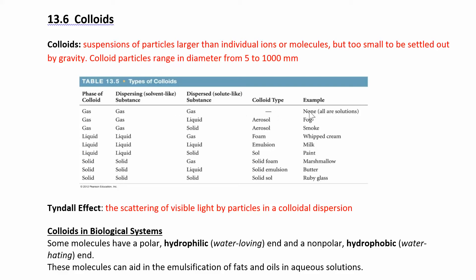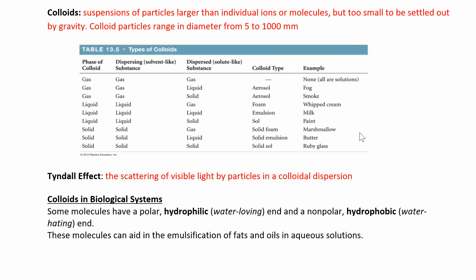There are a whole bunch of different kinds of colloids that you've actually experienced in nature or at home. Marshmallows are actually a colloid. These examples show different types of colloids based on what would be considered the solvent-like substance and what would be the solute. If you took a liquid and dissolved it into a gas, you get something like fog — so fog is a colloid. Milk, paint, all these sorts of things are colloids.